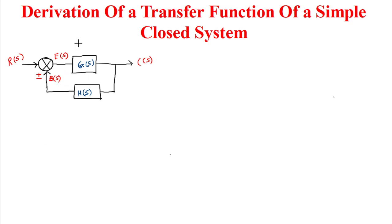Here we have a simple closed loop system in which R(s) is the Laplace transform of the input, C(s) is the Laplace transform of the output, E(s) is the Laplace transform of the error signal e(t), and B(s) is the Laplace transform of the feedback signal b(t).